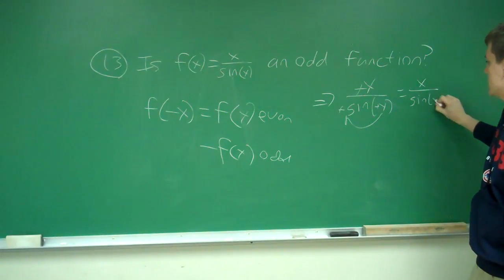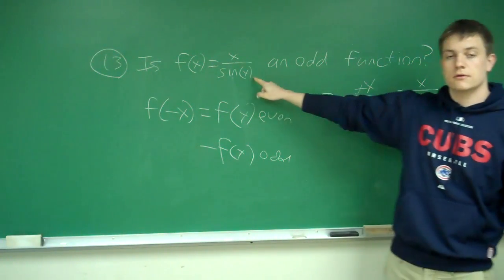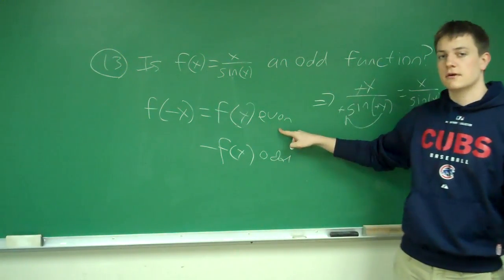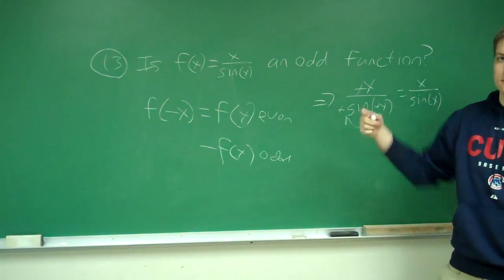And what's left is x over sine of x, which is what we started with. So f of negative x equals f of x. This is an even function, not an odd function, so this is false.